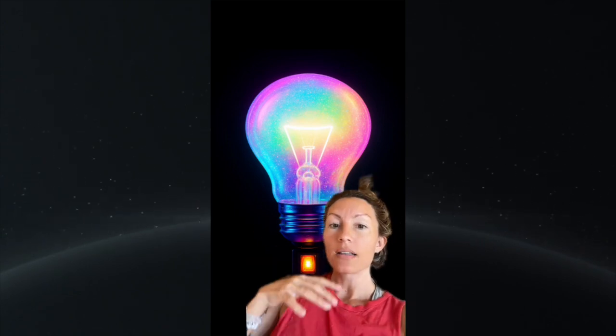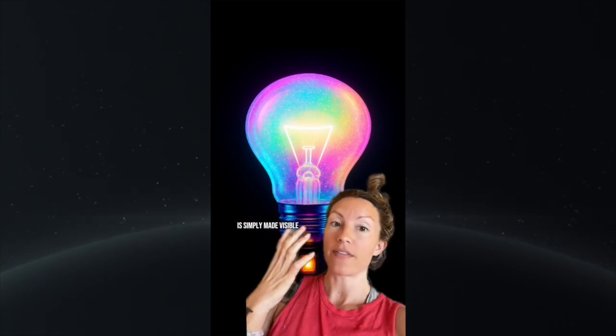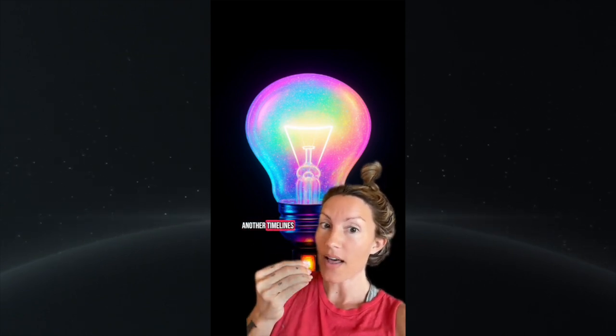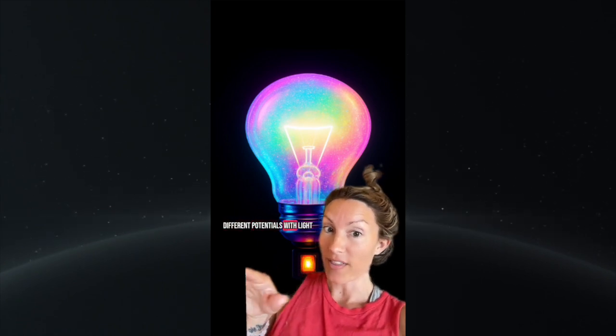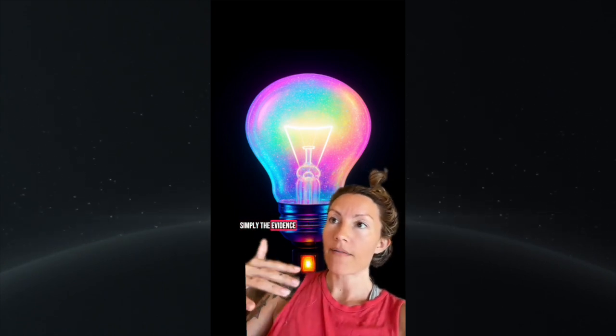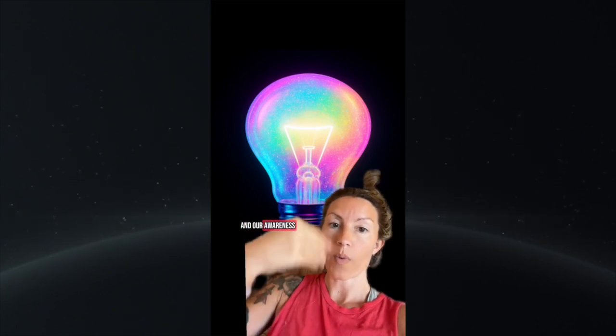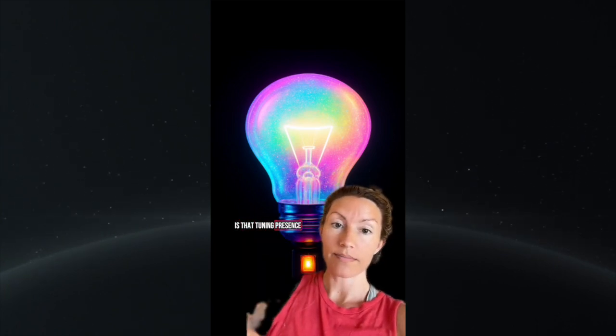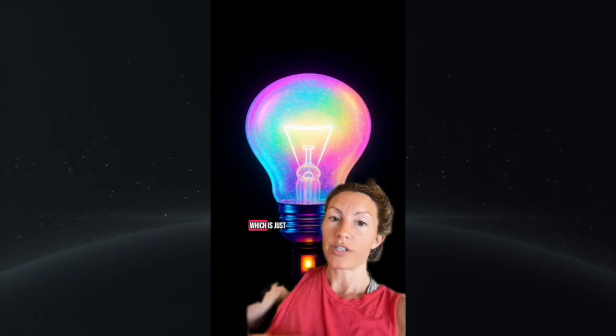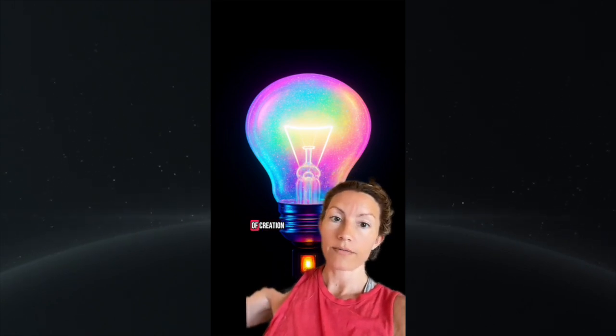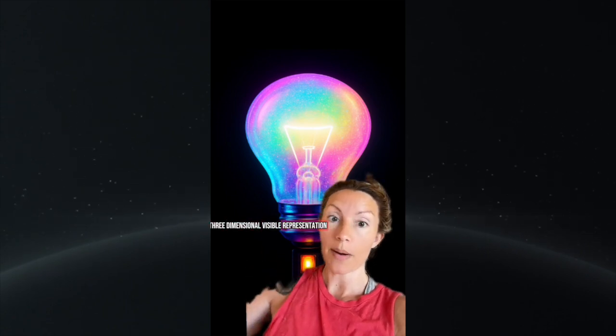Light is what happens in 3D when awareness tunes into a frequency of potential and that potential is simply made visible. That is eventually how we'll time travel or bring in other timelines because we'll be able to see different potentials with light. So light is simply the evidence of plasma consciousness synergizing. Plasma is the intelligent field. Consciousness is the directional force. And our awareness is that tuning presence. And light is the moment these all harmonize, which is just a visible echo of creation and just a three-dimensional visible representation.